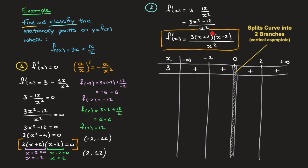I move to the next factor: x plus 2. This equals 0 when x equals negative 2, so I write 0 on that vertical line. For x-values between negative infinity and negative 2, x plus 2 is negative, so I write a minus sign. For all cells where x is greater than negative 2 — the second, third, and fourth cells — x plus 2 is positive, so I write plus in each.